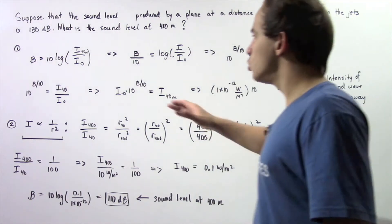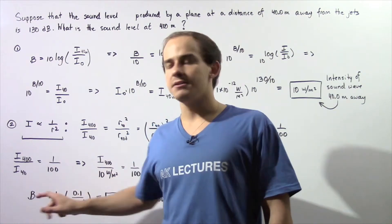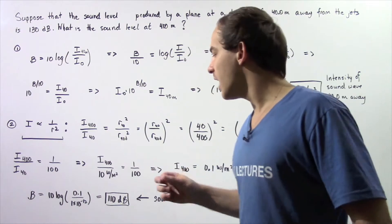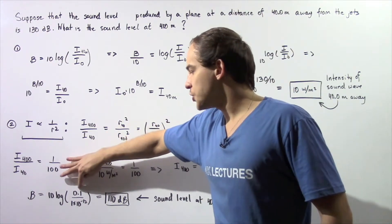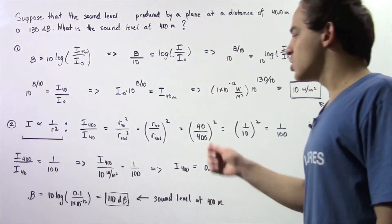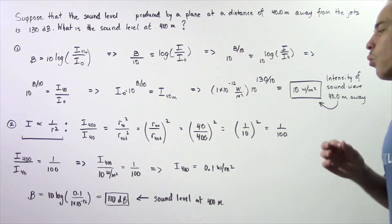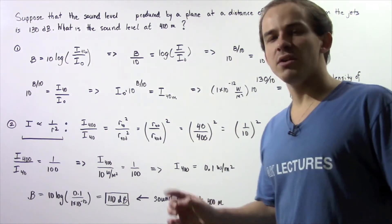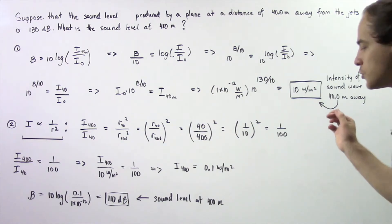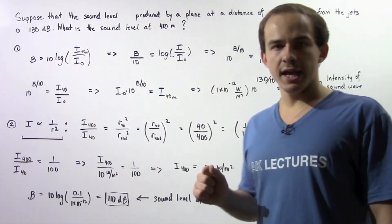Now we can use the sound level equation to solve for the sound level in decibels. The sound level B is equal to 10 multiplied by the log of the ratio of 0.1 to 10 to the negative 12. Plugging that into our calculator, we get 110 decibels as the sound level of the jets at a distance of 400 meters away from the plane.